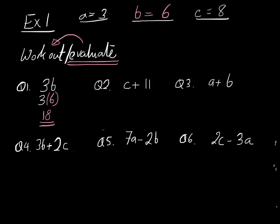And we're done for the first one. Remember 3b means 3 lots of b or 3 times b. So when you're putting 6 in, it means 3 times 6 or 3 lots of 6, which is 18.